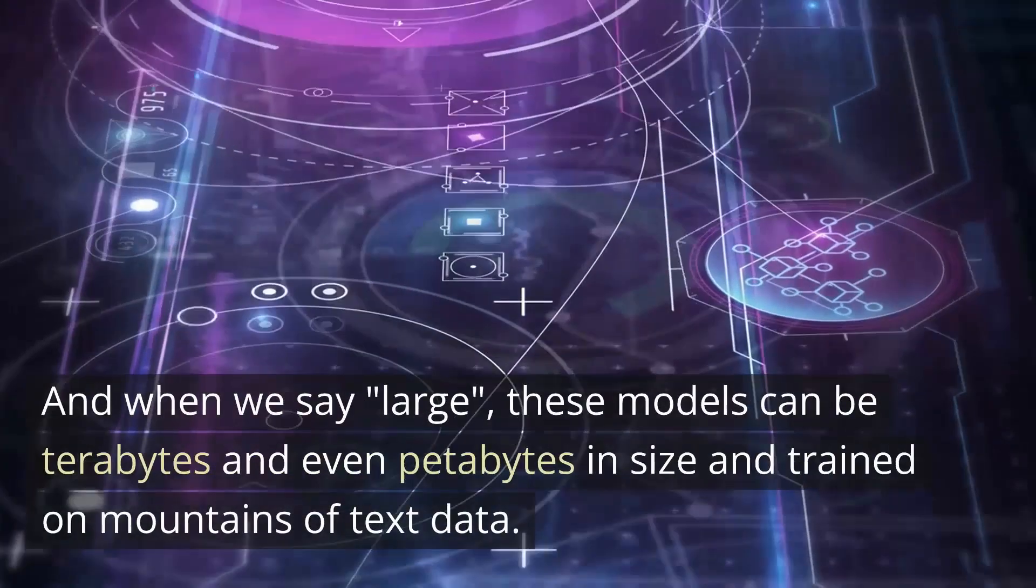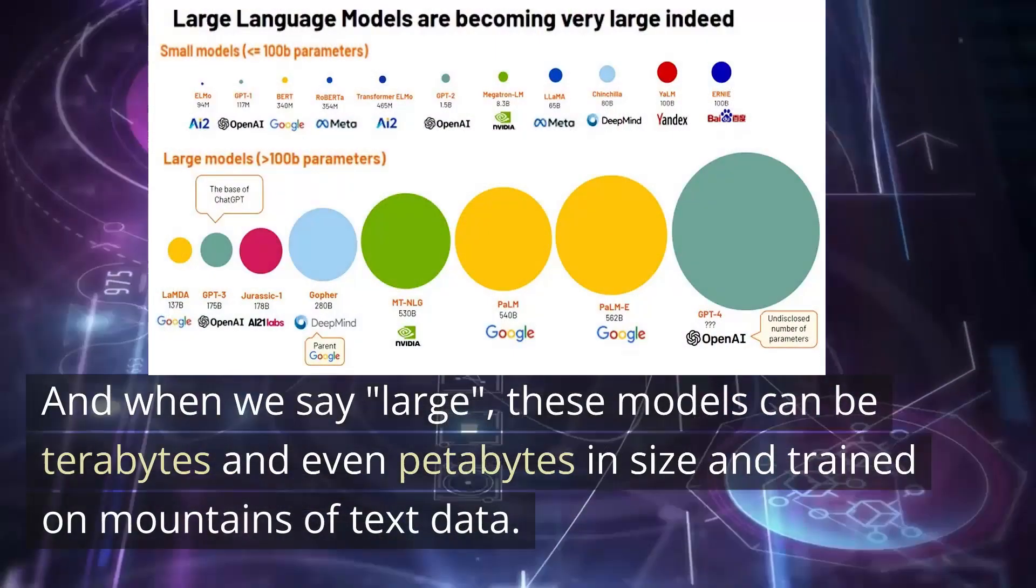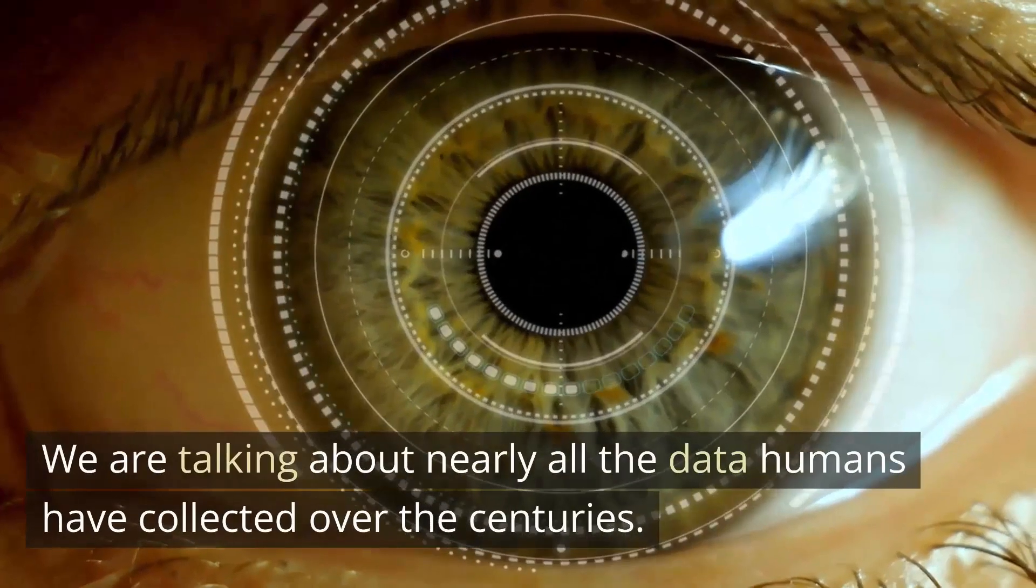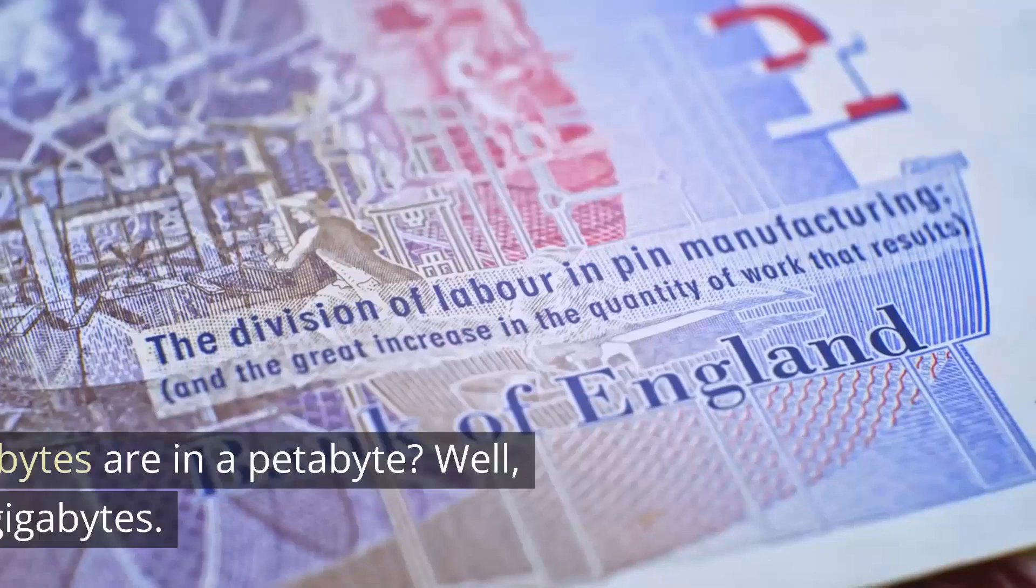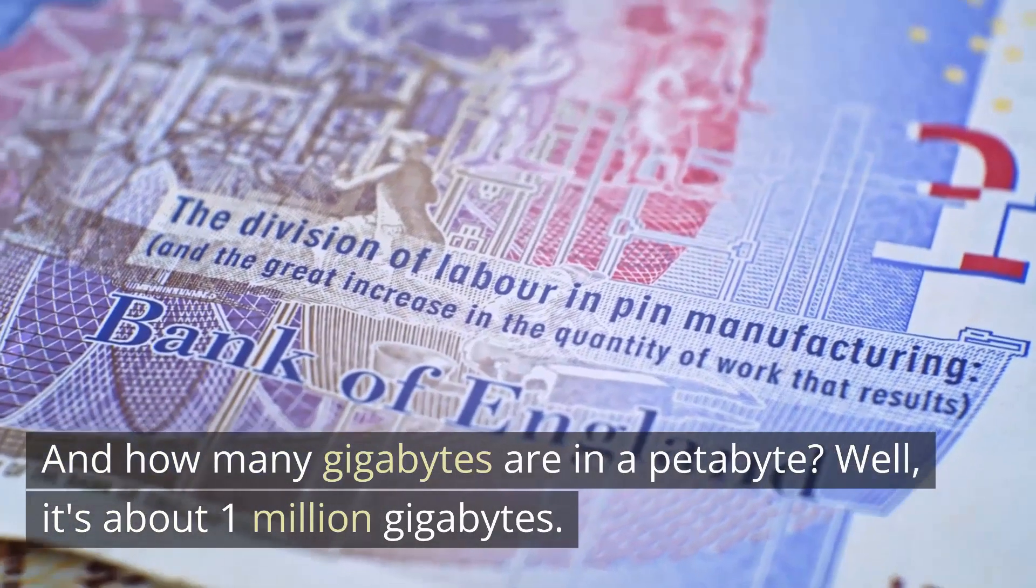And when we say large, these models can be terabytes and even petabytes in size, and trained on mountains of text data. We are talking about nearly all the data humans have collected over the centuries. And how many gigabytes are in a petabyte? Well, it's about 1 million gigabytes. That's a lot of text.